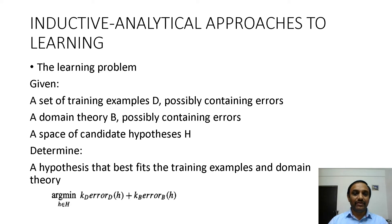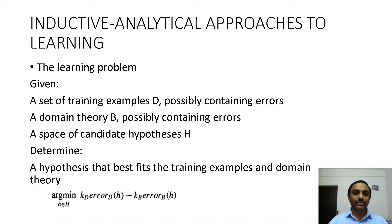In these combined systems, the inputs we provide are: first, a set of training data that may possibly contain errors; second, a domain theory which is prior knowledge that may also contain errors; and third, a space of candidate hypotheses. Using these inputs, we get the following output: a hypothesis that best fits the training examples and domain theory. While developing these algorithms, we must consider and reduce the errors present in both training data and prior knowledge.